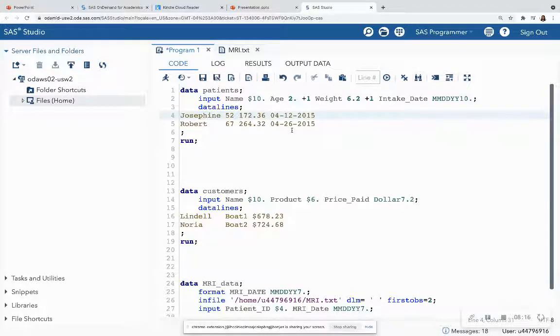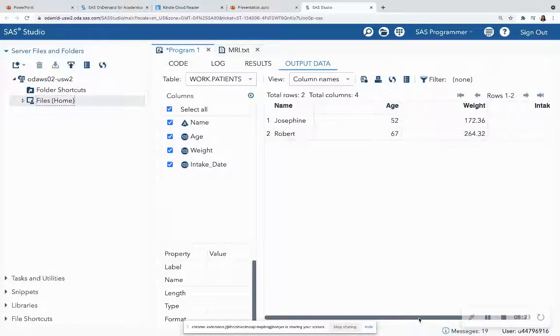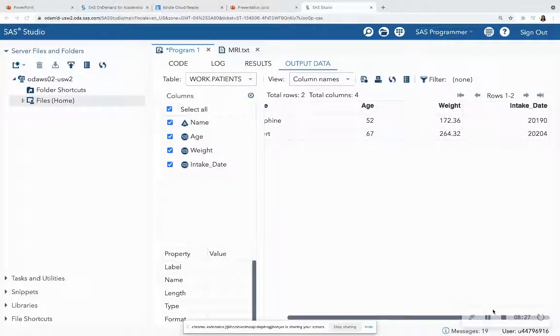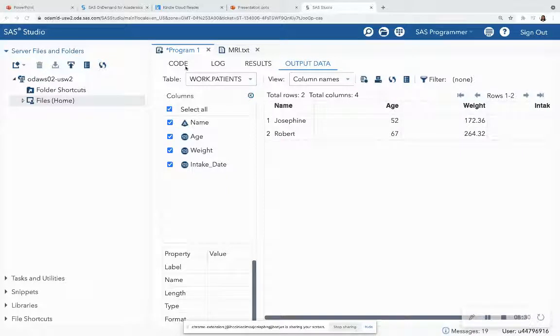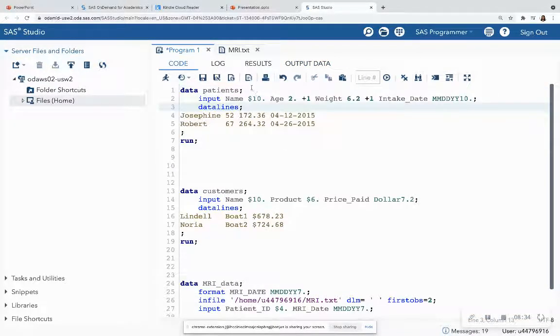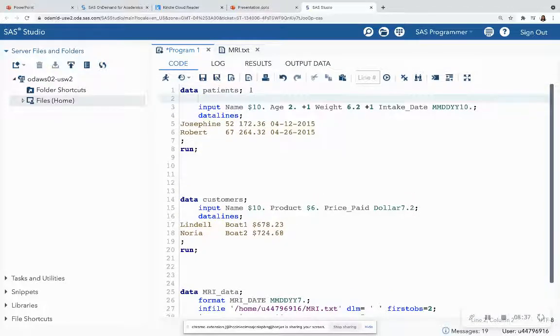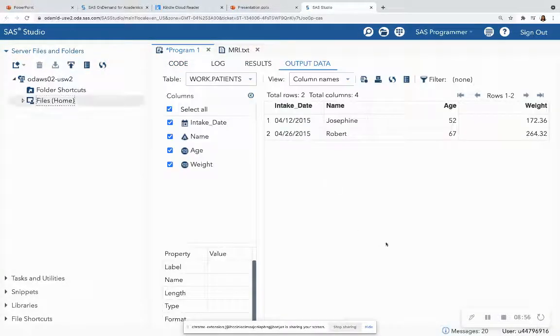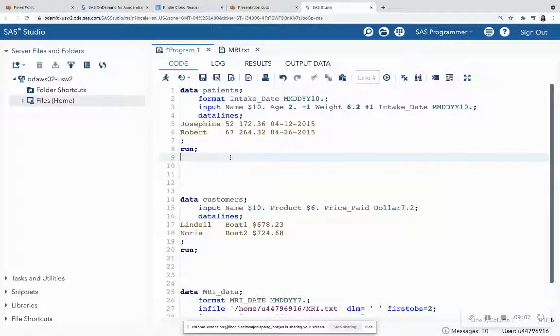So if I run this data step, I have the name, the age, the weight, and I have the intake date. Notice that that date does not look readable to me. So in lesson five, we talked about how we can add a format statement to actually format the date so that it's readable to us. The input statement only allows SAS to read in the date. It does not format it to us so that we're able to read it with our naked eye. So when I add that format statement, intake date moves to the front, and I see that now this is a readable date.